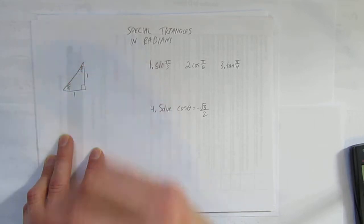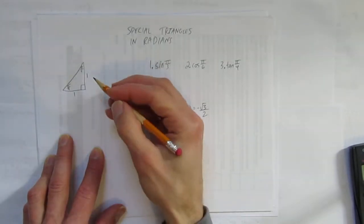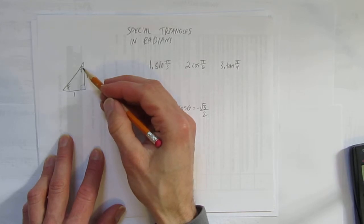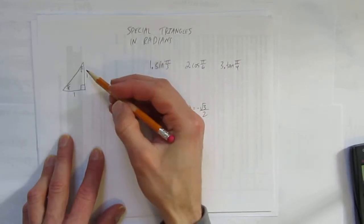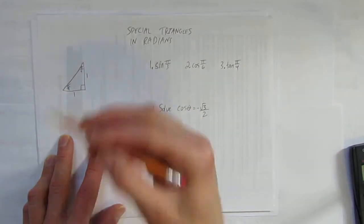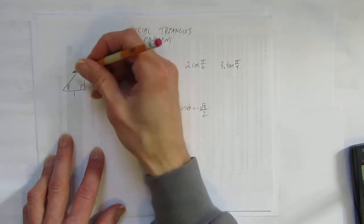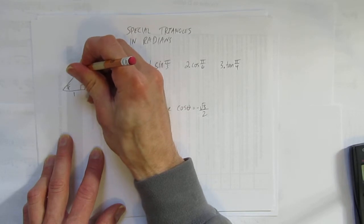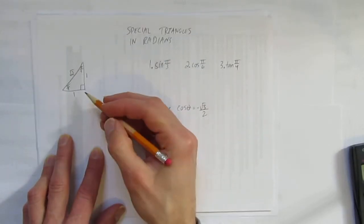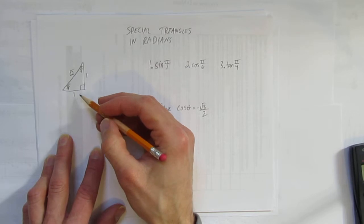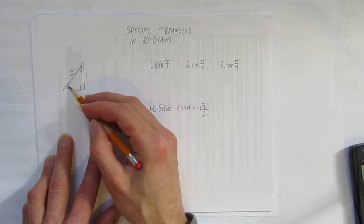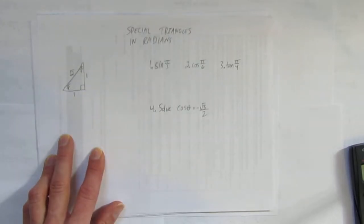Eventually you'll get good at thinking in radians, but if you're having trouble: pi is the same as 180 degrees. So 45 degrees is 180 divided by 4, or pi over 4. The hypotenuse of this triangle is root 2. So we have a 1 with pi over 4 across from it, another 1 with pi over 4 across from it, and root 2 as the hypotenuse.